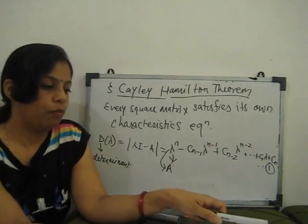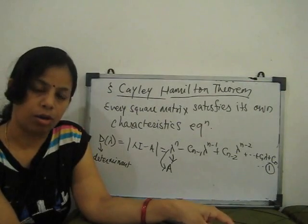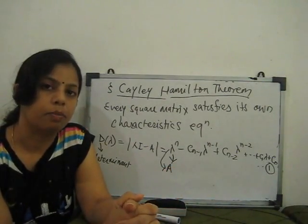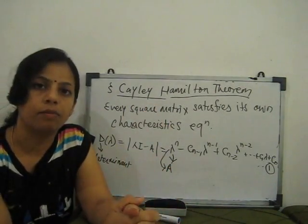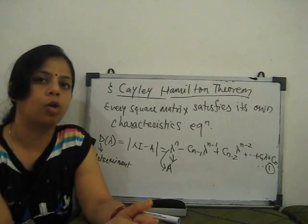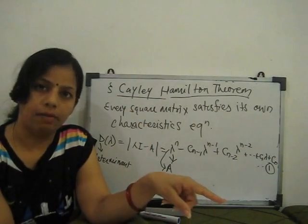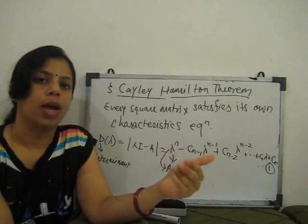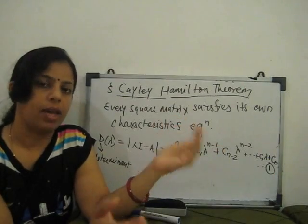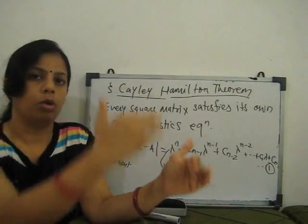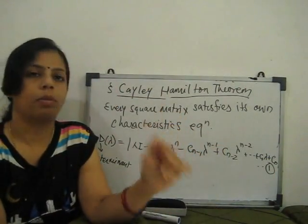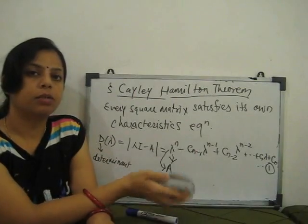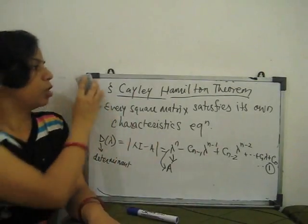Now I will show the proof of this theorem, and then we will go further for some examples. With the help of this theorem we can find the inverse of any matrix, and compute square, cubic, and very higher order multiplications easily. So first, the proof of this theorem.